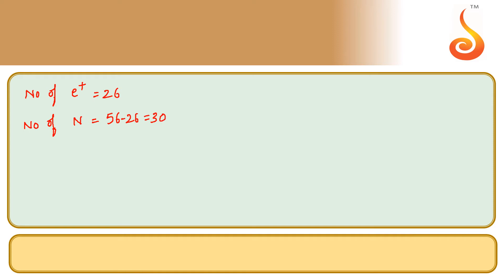Therefore, binding energy is nothing but the sum of masses of proton and neutron minus the actual mass of the iron will give the mass defect, and mass defect times c squared will give us the binding energy.